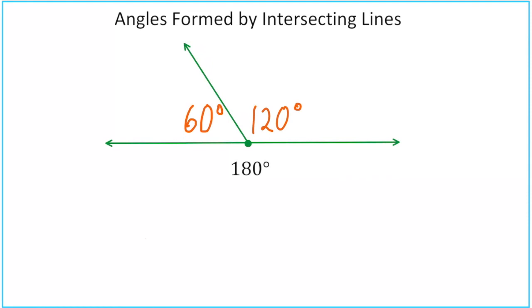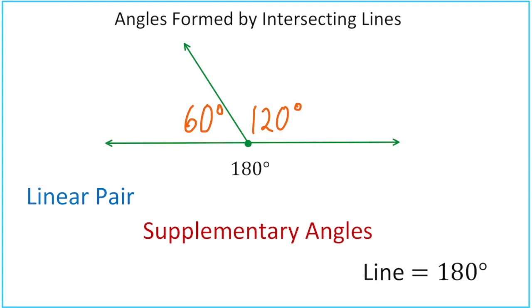There's a couple names that we can give to this relationship. One of them is linear pair. Another one is supplementary angles, and the last one is line equals 180. Let's go ahead and take a look at each one of these.